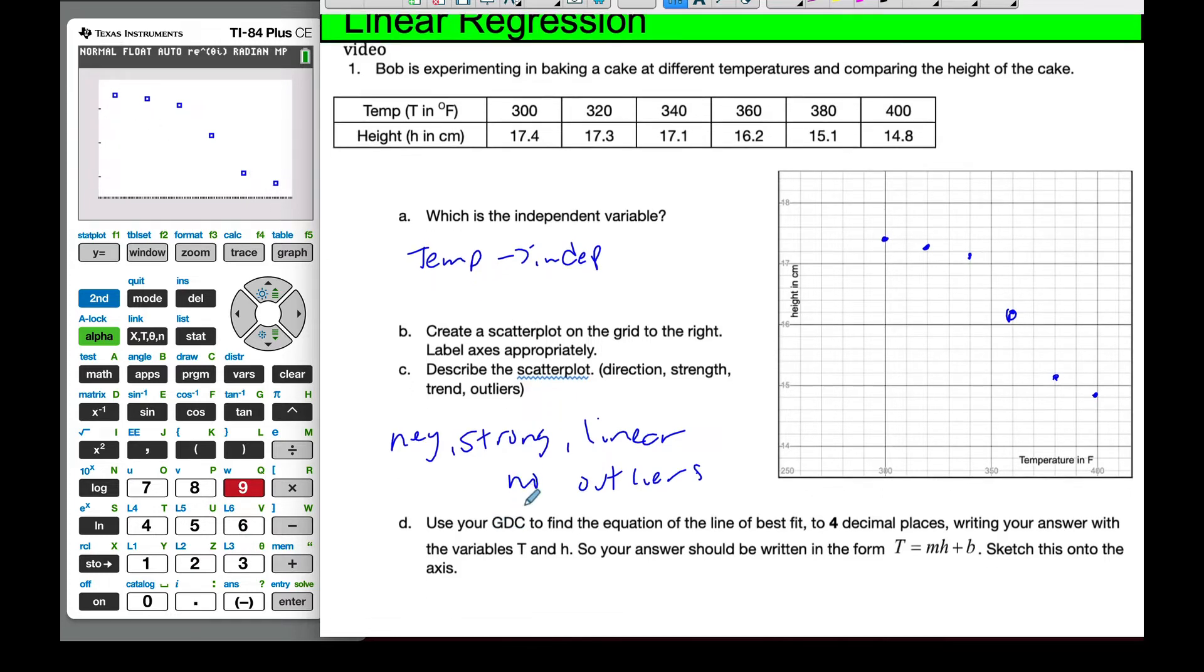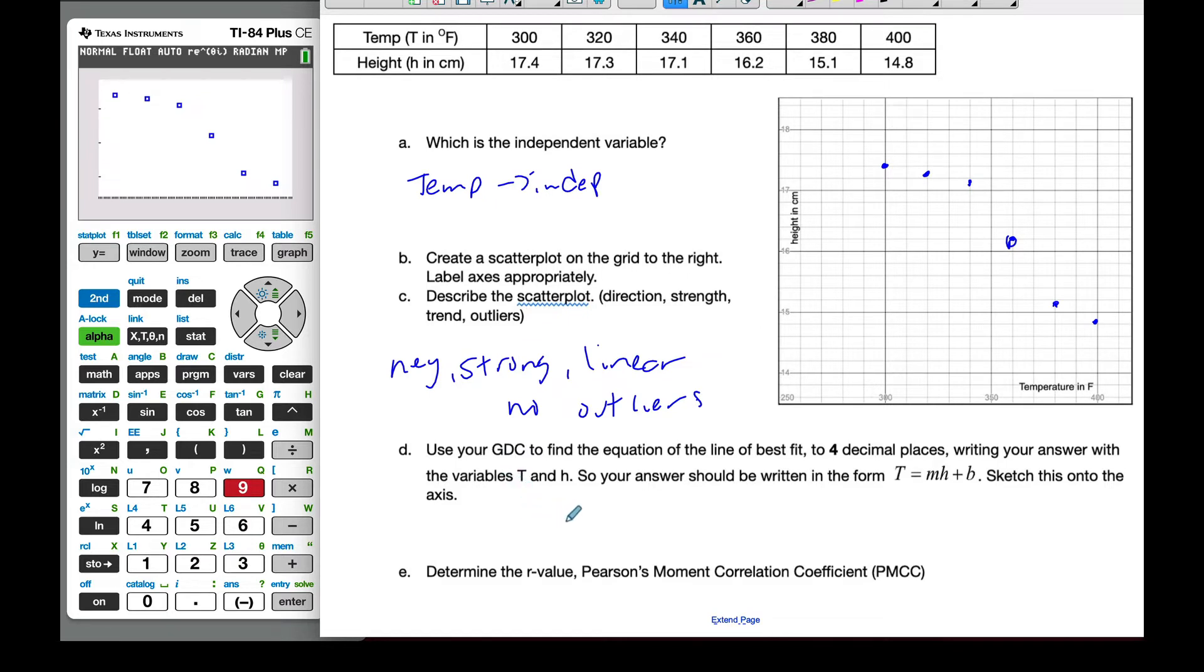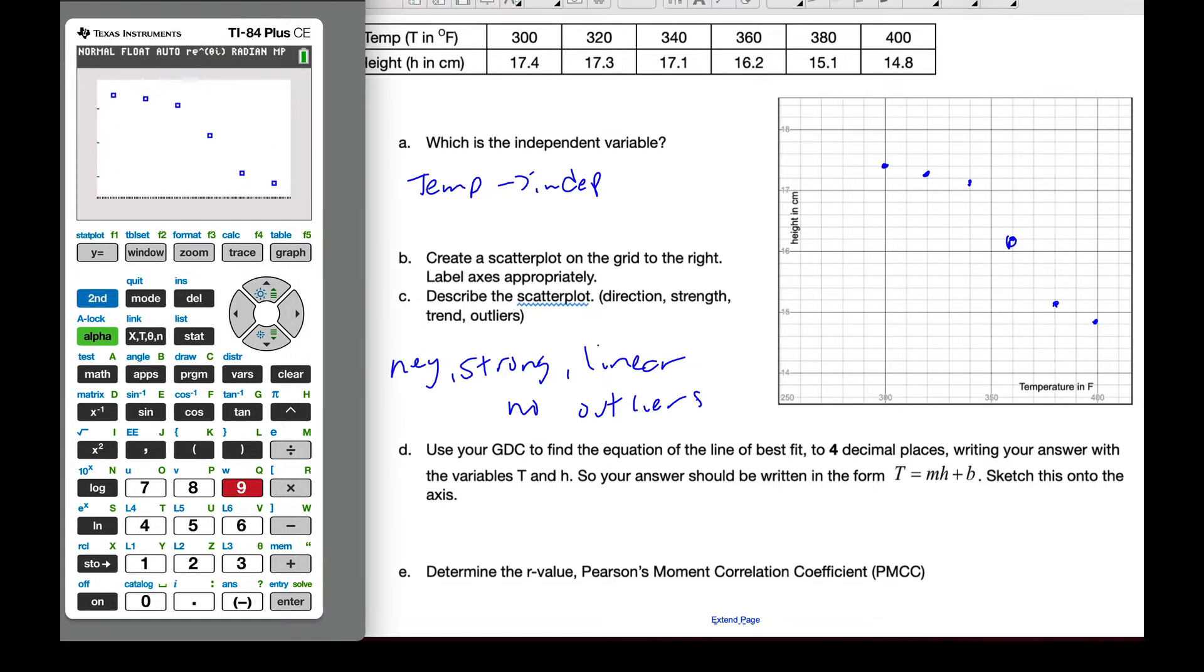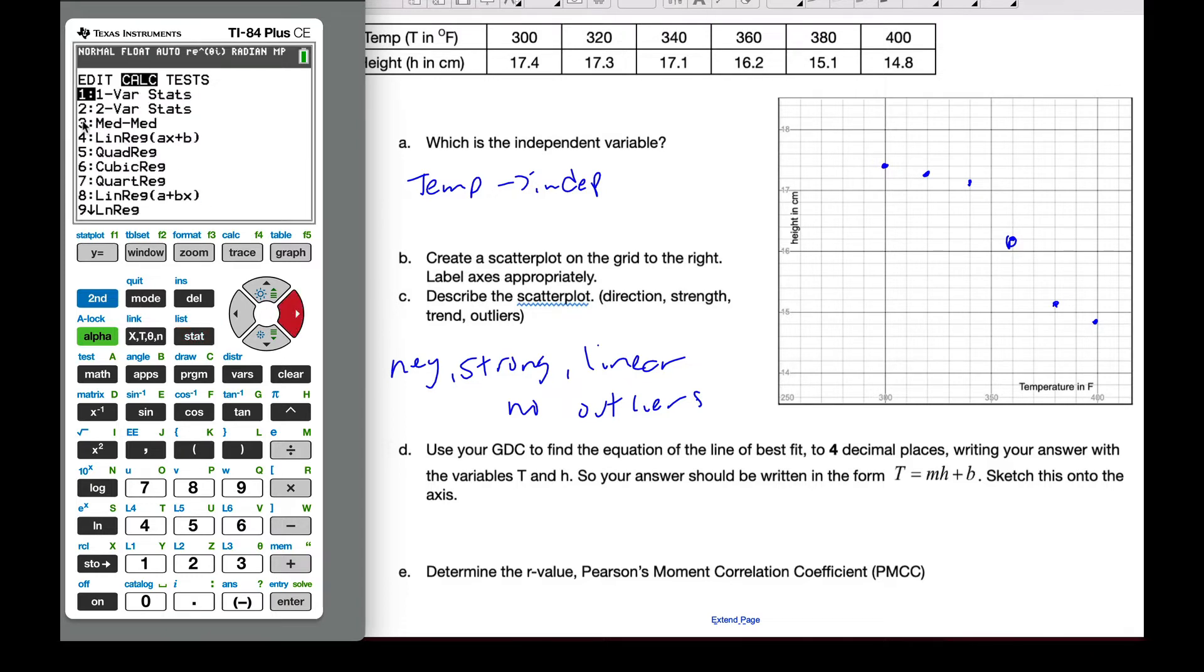On your GDC, find the equation of the line of best fit to four decimal places, writing your answer with these variables, T and H. So when I look at this, if I want to do that, I'm going to go to stat. And when I do calculation, I'm going to toggle to the right. And I'm going to do linear regression. Now, if I look at number 4 and number 8, they are exactly the same. It's the only order.